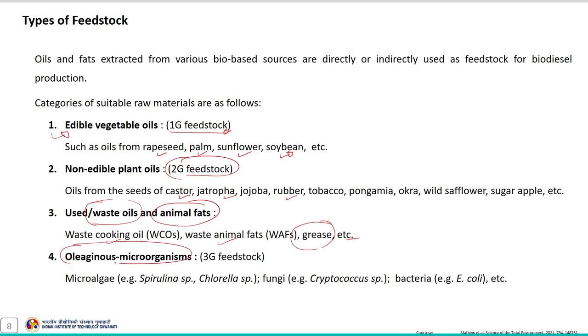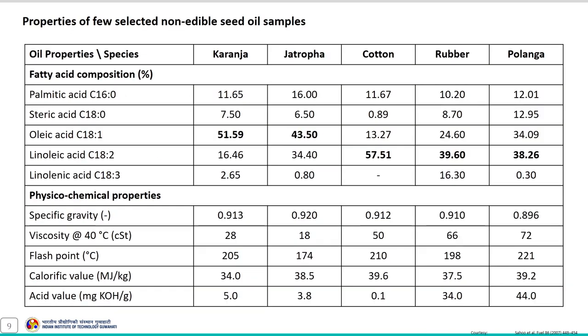Similarly, oleaginous microorganisms containing significant amounts of lipids are also considered as raw material for biodiesel production and are termed as third generation feedstock, which includes microalgae, fungi and bacteria. As discussed, these oily feedstocks are derived from various different bio-based sources and various technologies are used to produce them. As a result there is significant variation in their properties.